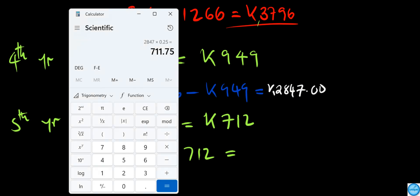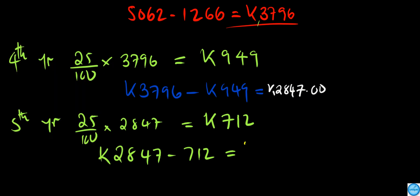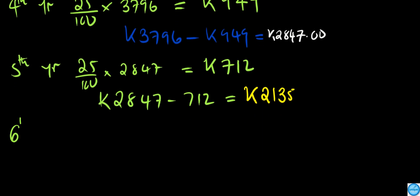To find the cost at the end of year five, we do 2,847 minus 712, which gives us 2,135. So 2,135 is the new book value at the end of year five.